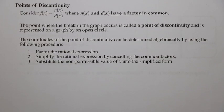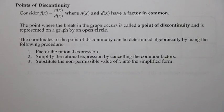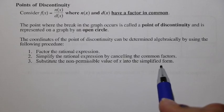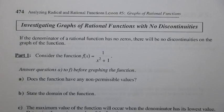For points of discontinuity, n(x) over d(x) must have a factor in common that can be cancelled out, but with a domain restriction. On the graph, the point of discontinuity appears as an open circle — a hole. The coordinates can be found by factoring top and bottom, cancelling common factors, then substituting the non-permissible x value into the simplified form. Not all rational functions have discontinuities.